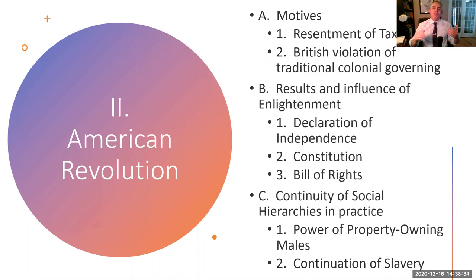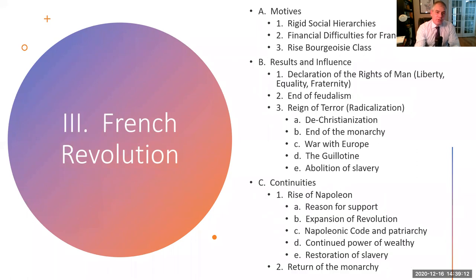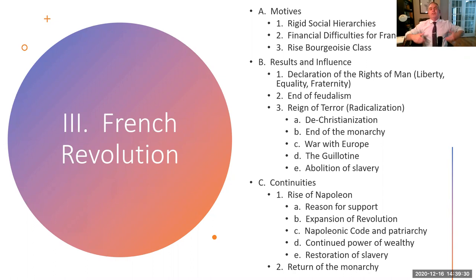The American Revolution is significant because these British colonies rejected British authority, declared their independence, and became their own nation. This nation is founded upon a principle of equal rights for all men. There's no other nation at that point which advances such principles. And this American Revolution is going to help provoke the next revolution — the French Revolution. The French Revolution is going to happen in the famous year of 1789. We use 1776 for the American Revolution and 1789 for the French Revolution. In a lot of ways, the French Revolution is going to be the more impactful revolution of the two.